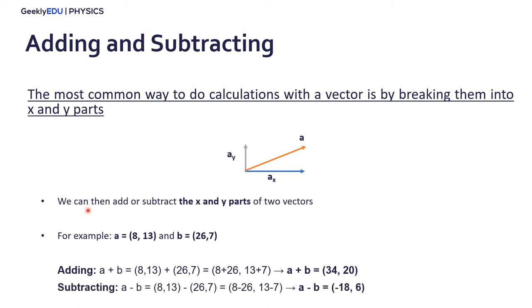To subtract a minus b, we do 8 minus 26 and 13 minus 7. The result is negative 18 and 6.